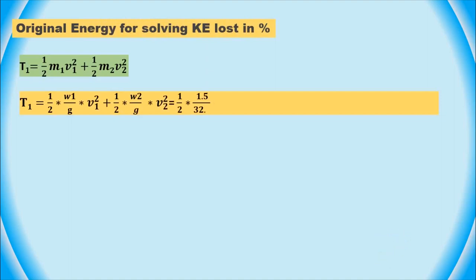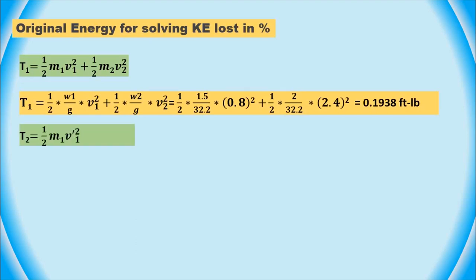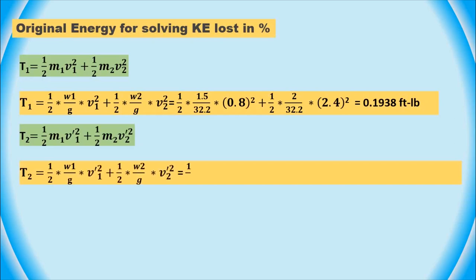In this problem, we are given the mass of the two cylinders: M1 equals 1.5 pounds and M2 equals 2 pounds; their initial velocities: V1 equals 0.8 feet per second and V2 equals minus 2.4 feet per second; the coefficient of restitution E equals 0.5; and the fact that the shaft is smooth. Using this information, we can calculate the final velocities V1' and V2' of the cylinders after the collision using the equations of motion for elastic collisions.